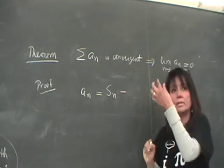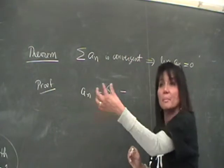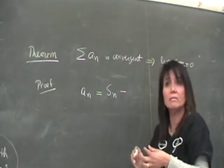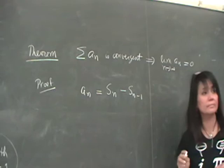Take away what? Which sum? S sub N minus 1. Do you guys see that? Right? So you have this, correct?